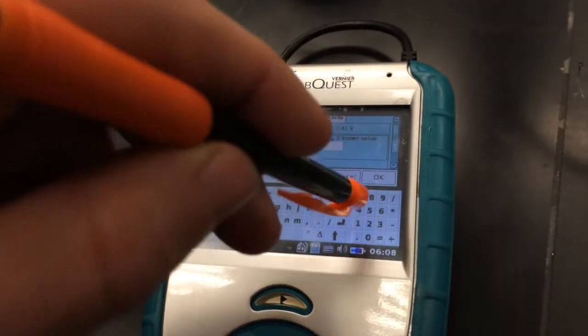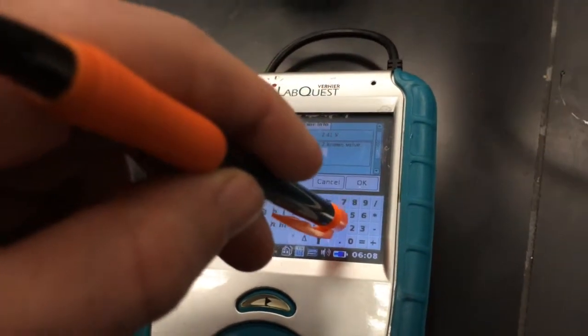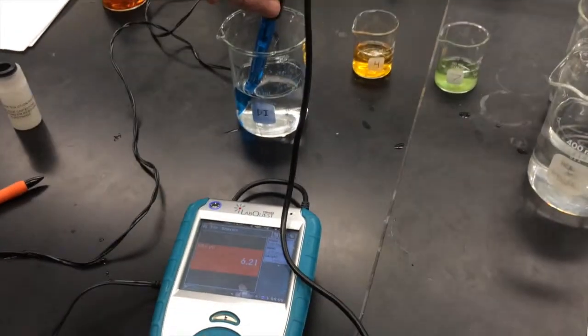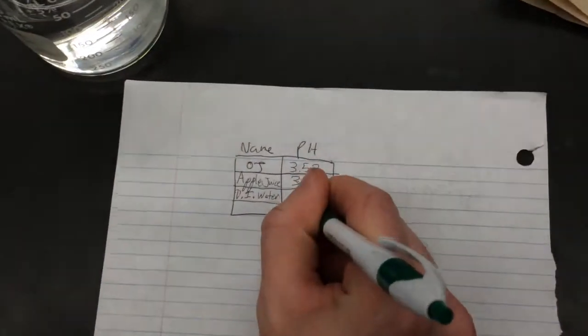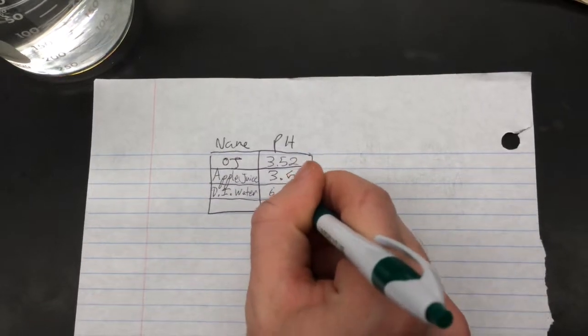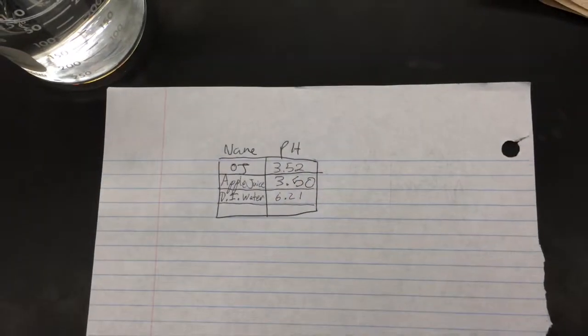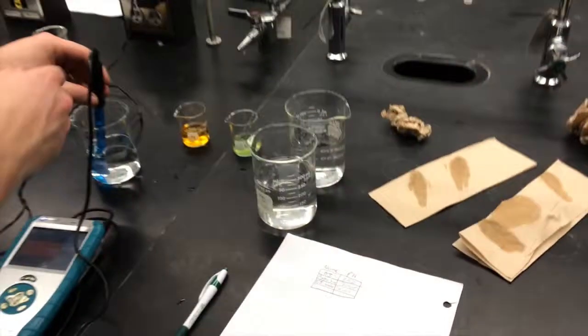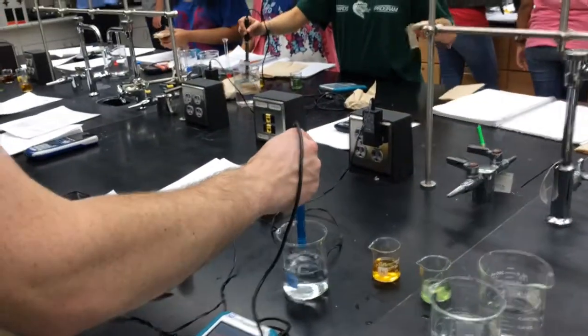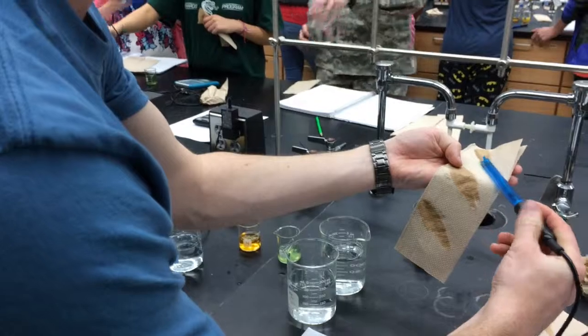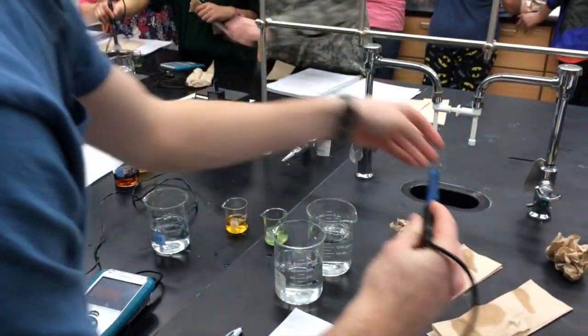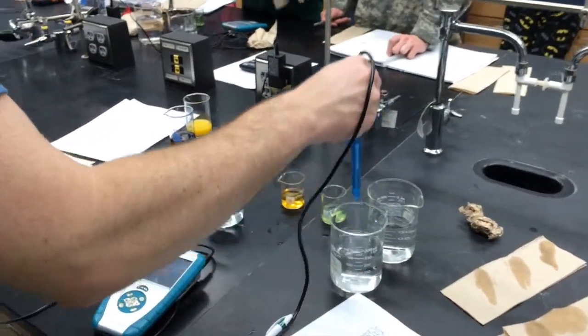Now the pH meter is calibrated to test for his solution. Patton obtains the pH for deionized water, which comes out to 6.21. Now that Patton is done testing for his solution, he cleans the probe and prepares it for storage.